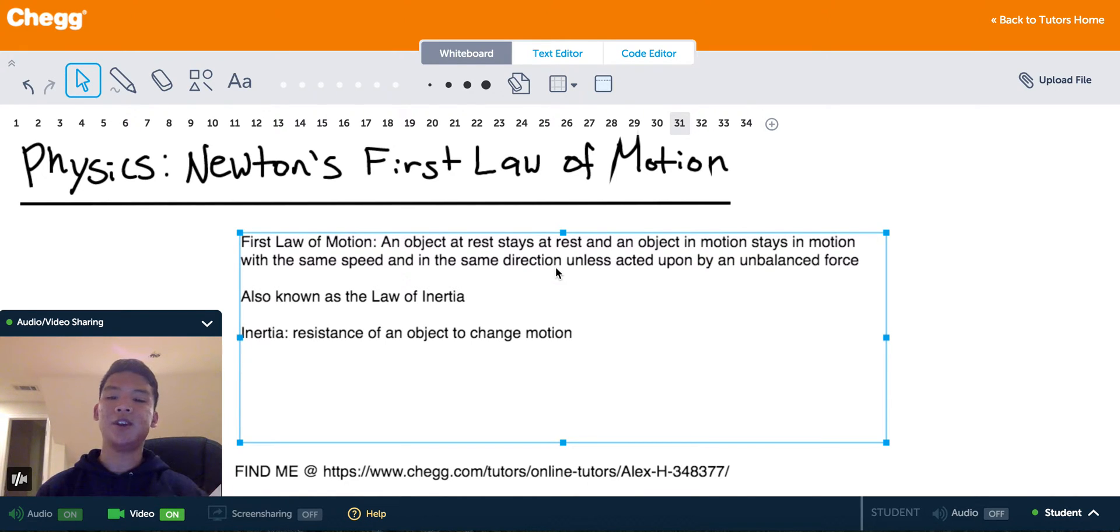The First Law of Motion is also known as the Law of Inertia. So what is inertia? Inertia is resistance of an object to change motion. You can see how this could be known as the Law of Inertia, because that's saying all objects, in whatever motion or rest they are in, they resist any change to how they currently are.